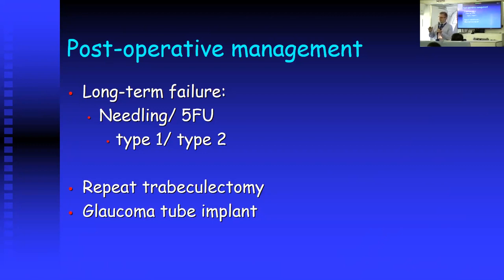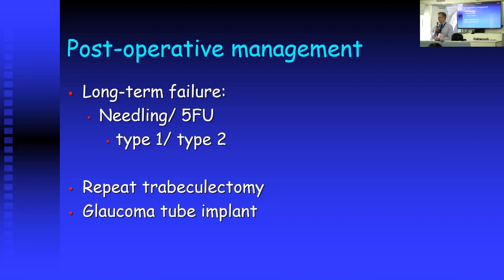With needling, you put a needle into the bleb and you have to decide whether the scarring is subconjunctival or underneath the scleral flap itself. If the scar tissue is subconjunctival, a needling procedure works quite well. If the scarring is underneath the scleral flap, you would need to go into the anterior chamber with a needle to free up that scar tissue. Six to eight months is a reasonable time to needle a trabeculectomy if the pressure is still high — you can still get a trabeculectomy functioning after that length of time.